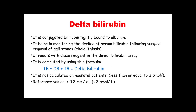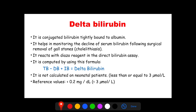Delta bilirubin is bound to albumin in a covalent fashion, making it soluble in blood. It helps in monitoring the decline of serum bilirubin following surgical removal of gallstones (cholelithiasis), and it reacts with diazo reagent in direct bilirubin assay. Delta bilirubin is computed by adding direct and indirect bilirubin and deducting that from total bilirubin. It is not calculated in neonatal patients, as the concentration is ≤3 micromoles per liter.